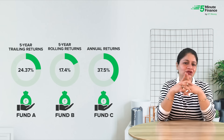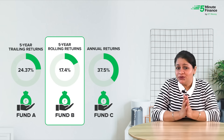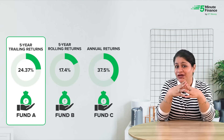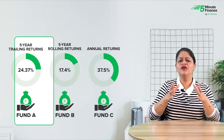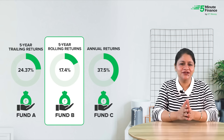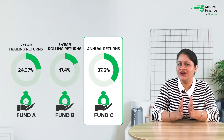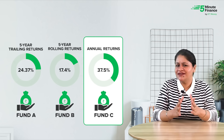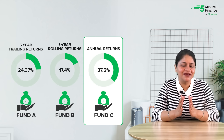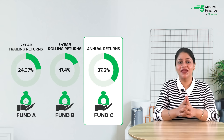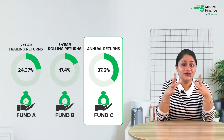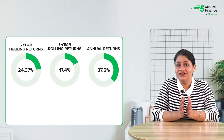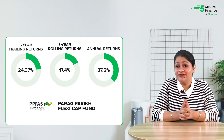Look at this interesting returns picture on your screen. Which one will you select to invest your money? Fund A, which has given a five-year trailing return of 24.37%, or Fund B with five-year rolling returns of 17.4%, or Fund C with annual returns of 37.5%? If you've made a choice, mention your answer in the comments before proceeding. What if I tell you that these three returns belong to the same fund?